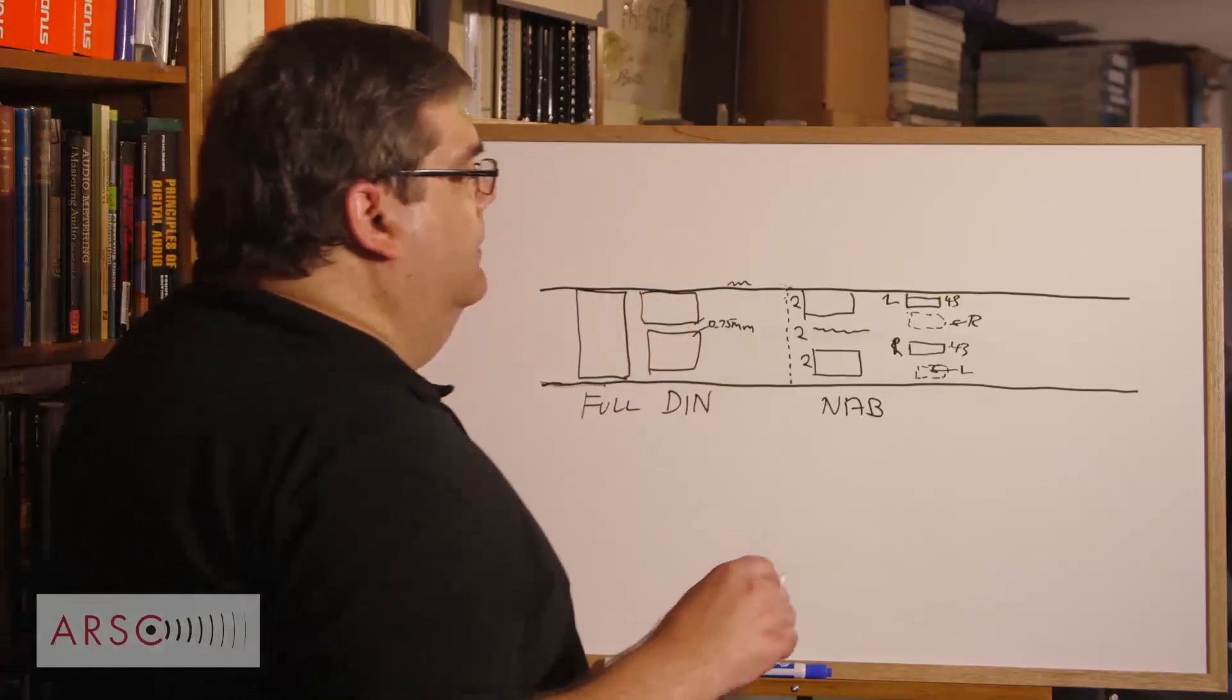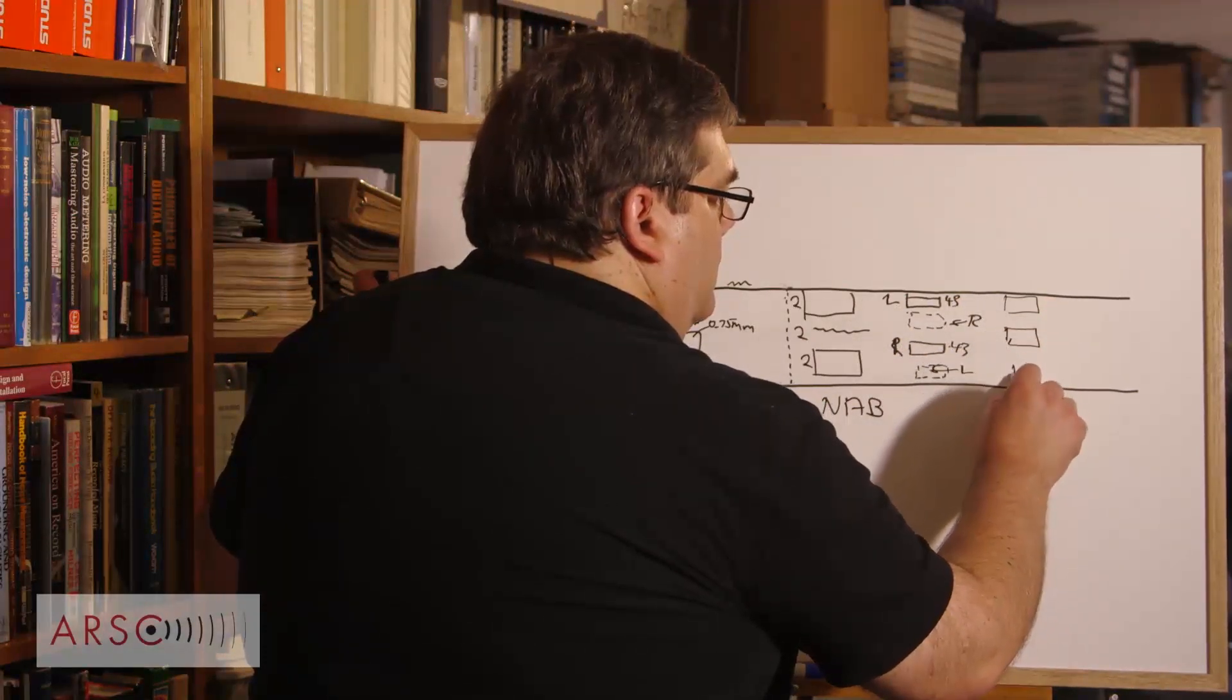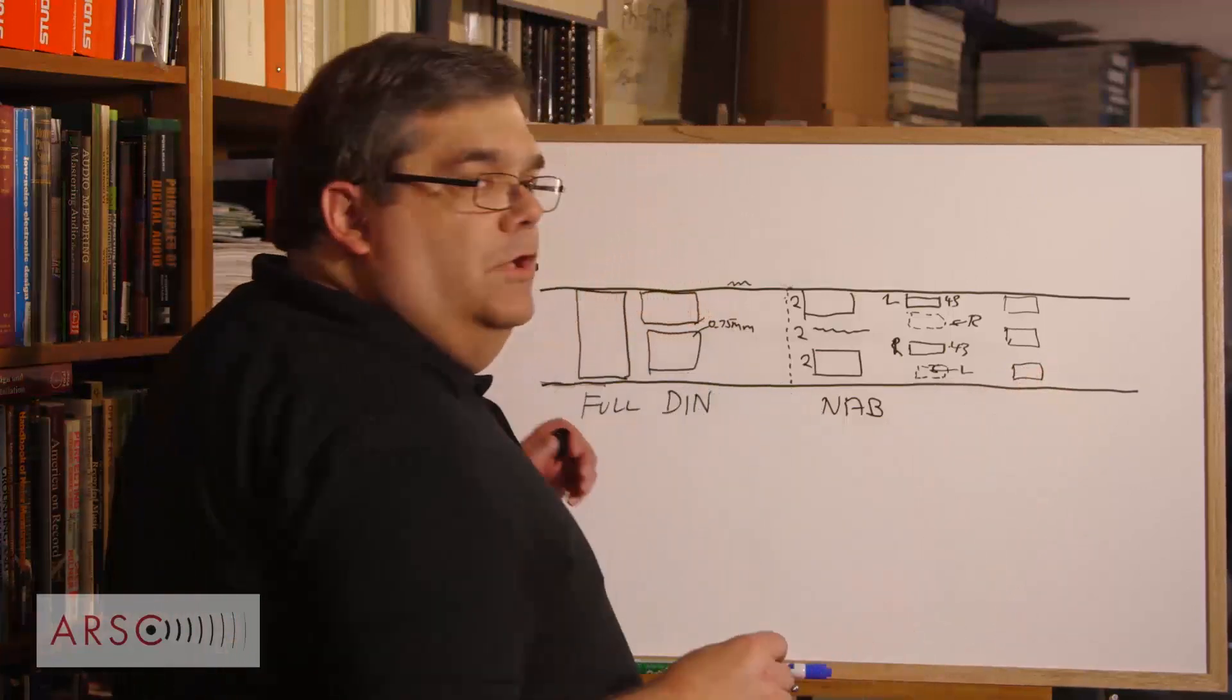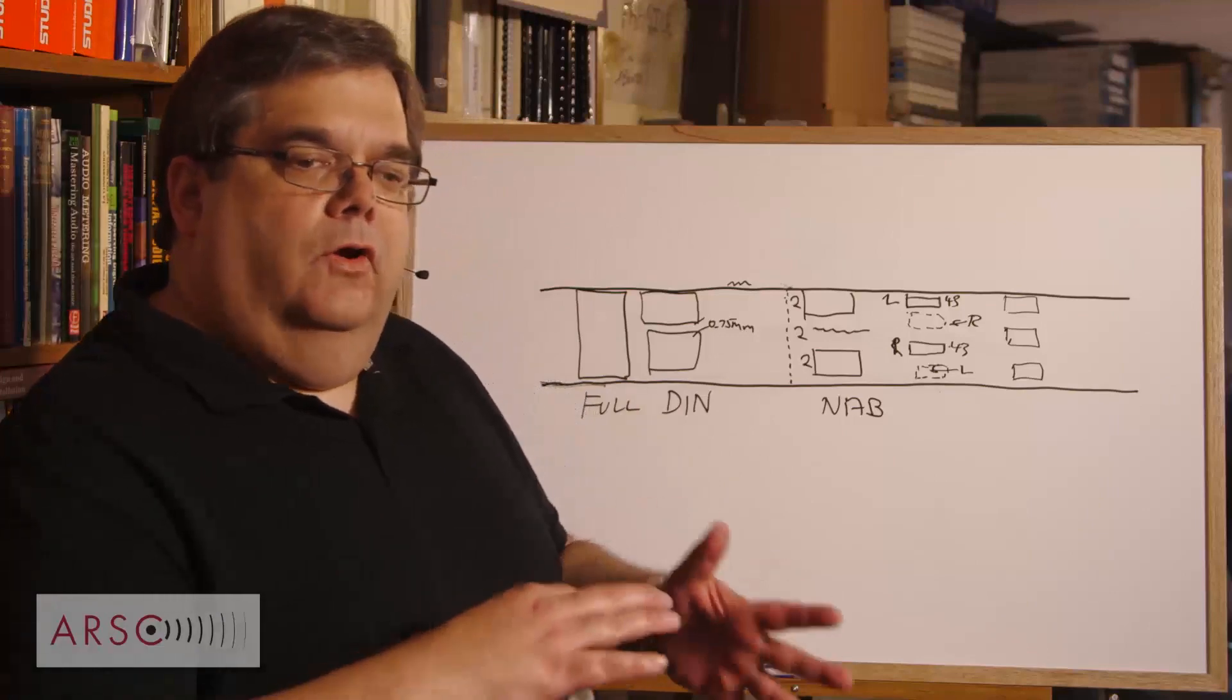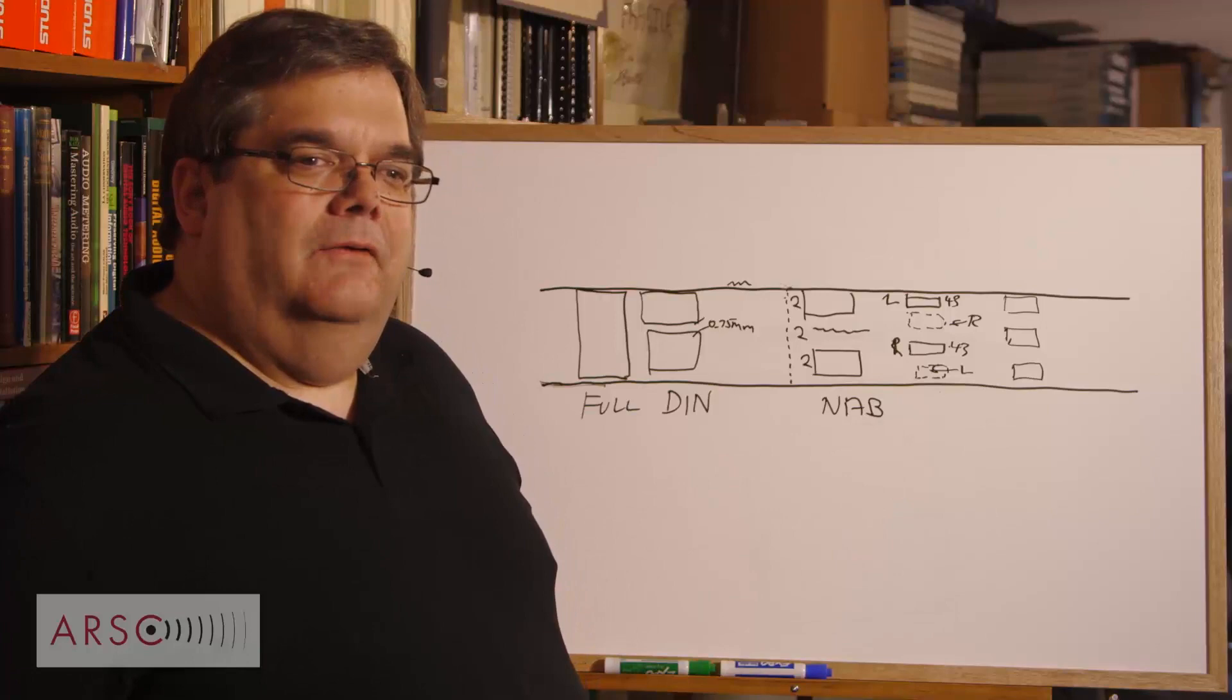The odd ball, same track width, 43 mils. There were three-channel formats. In the early 50s, they did three-channel recording, left, center, right, in that format.